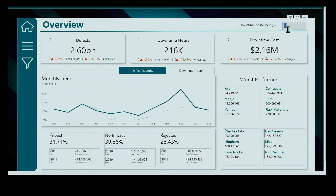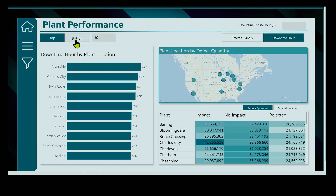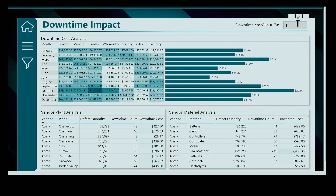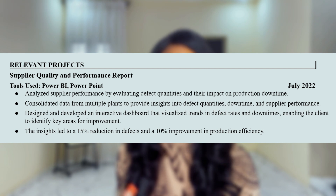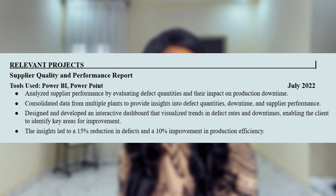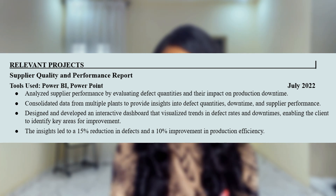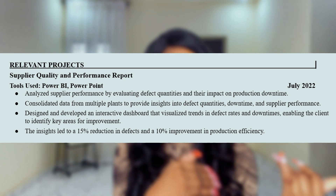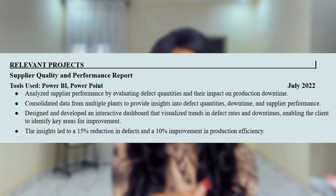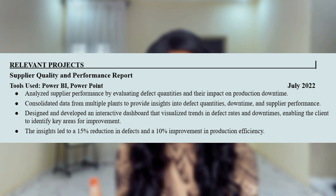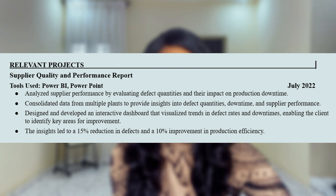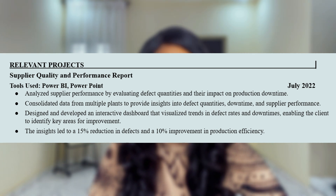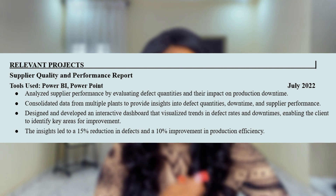Let me show you an example. Here's a Supplier Quality Report project I built and here's how I would include it on my resume. Title: Supplier Quality and Performance Analysis. Tools used: Power BI, PowerPoint. Objective: analyze supplier performance by evaluating defect quantities and their impact on production downtime. My role: design and develop an interactive dashboard that visualizes trends in defect rates and downtime, enabling the client to identify key areas for improvement. Outcome: the insights led to a 15% reduction in defects and a 10% improvement in production efficiency. This format clearly communicates the skills used, the problems solved, and the impact achieved.